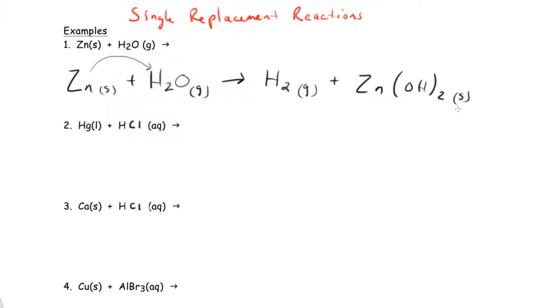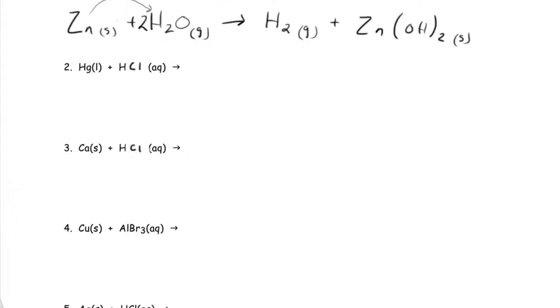Okay, so we now have to balance it. So we're going to need two waters. And that means we have one zinc on each side, four hydrogens on the left, four on the right, and two oxygens. Let's look at the next example here where we have mercury.